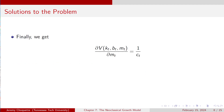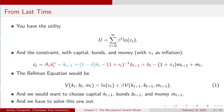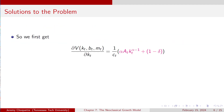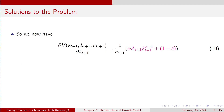Now we've got to do money. The derivative of V(K_t, B_t, M_t) with respect to M_t is also 1/C_t. Why? Because M_t appears on its own in the constraint with a leading coefficient of 1 and exponent of 1 — so the derivative of the constraint with respect to M_t is just 1, which tells us the derivative is 1/C_t. Updated one period, it's 1/C_{t+1}. So I have the envelope condition for capital, for bonds, and for money.